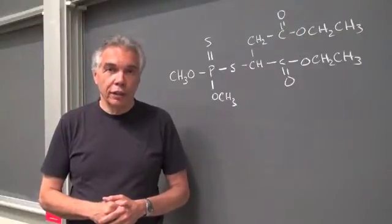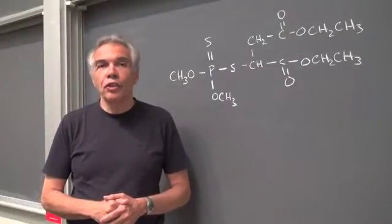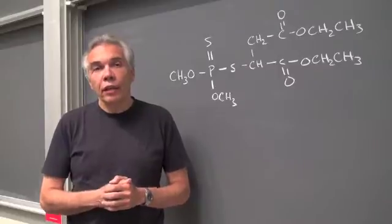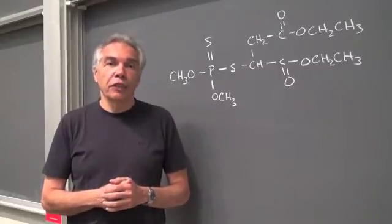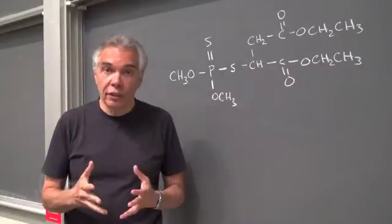Back in the 1930s, Gerhard Schrader, working for the IG Farben company in Germany, discovered a set of compounds that interfered with the functioning of the nervous system.